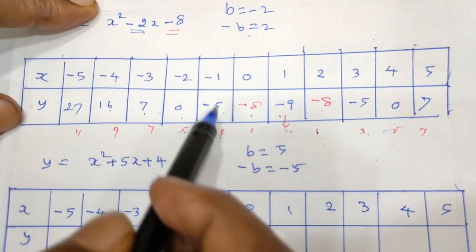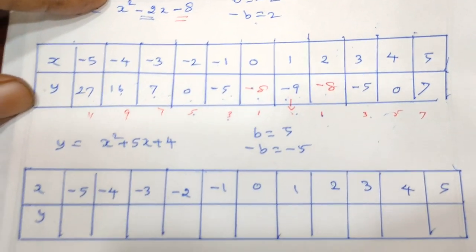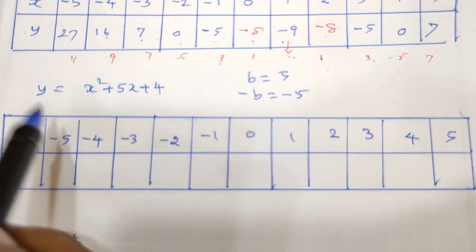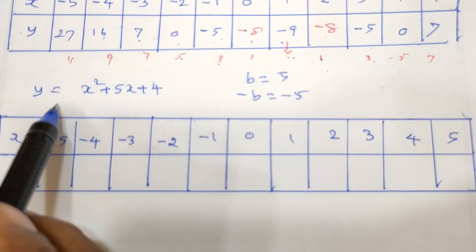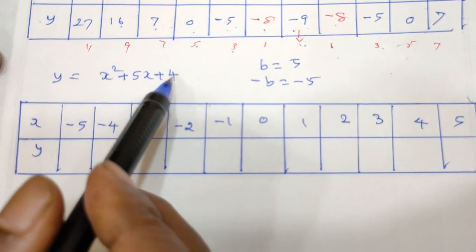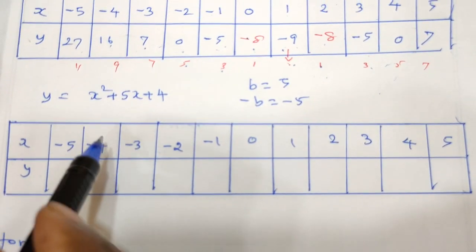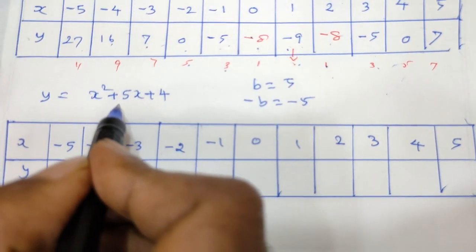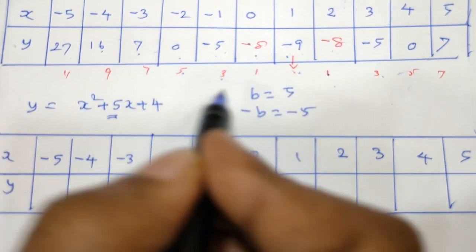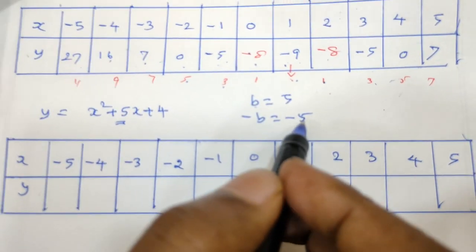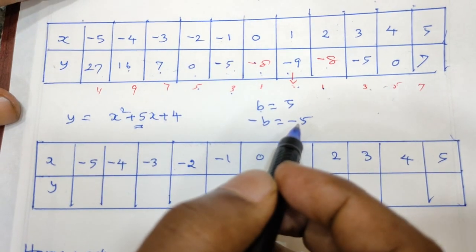Add 27 — it's possible. It's possible. y equals x squared plus 5x plus 4. b equals 5. What is negative of this? Minus 5.